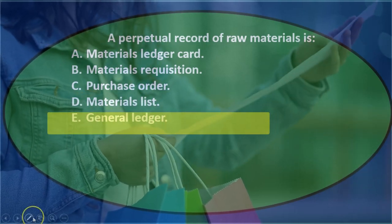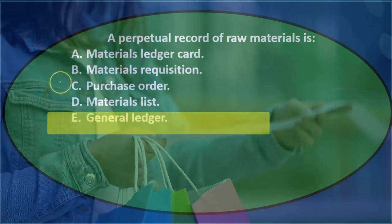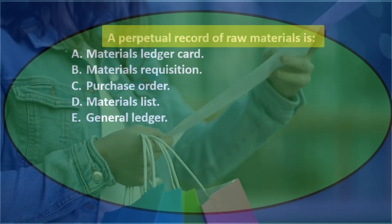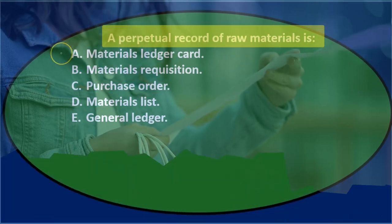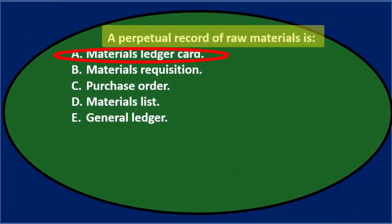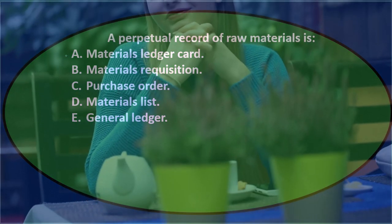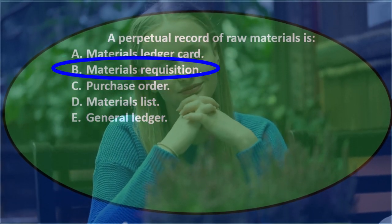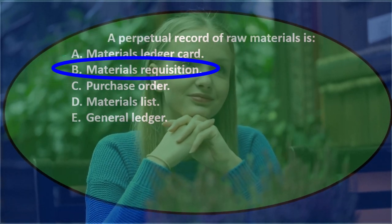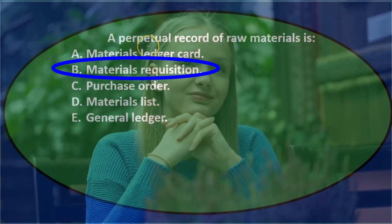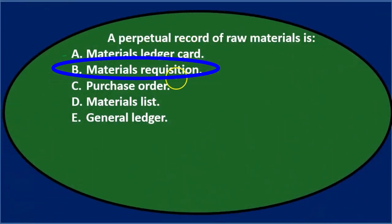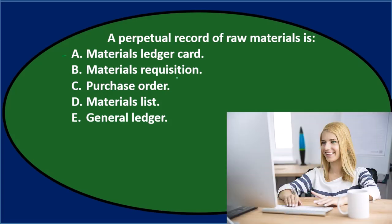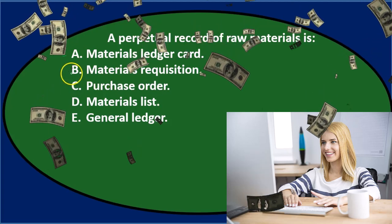Let's go through this using the process of elimination. A perpetual record of raw materials — option A, materials ledger card, sounds like a real term, so I'll keep that. Option B, materials requisition, should sound familiar, but it doesn't really sound like a perpetual record — it sounds like a request. So I don't think it's B.